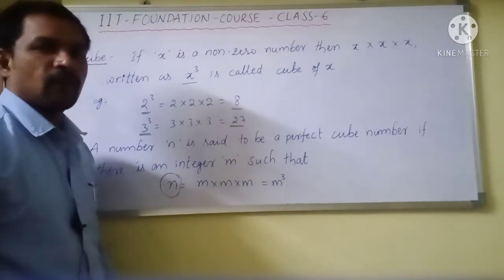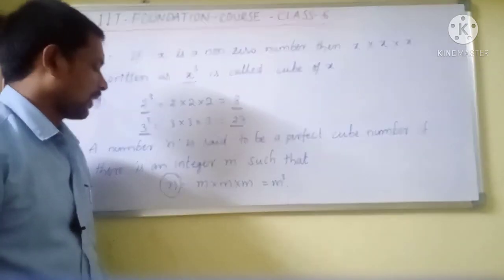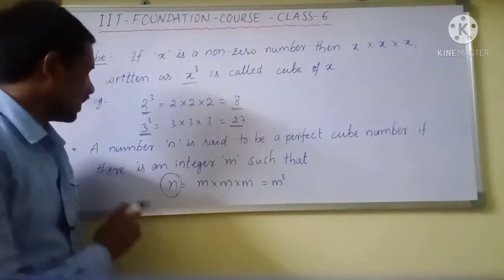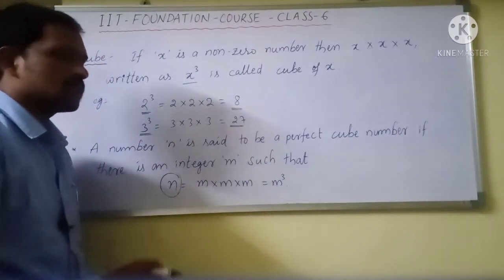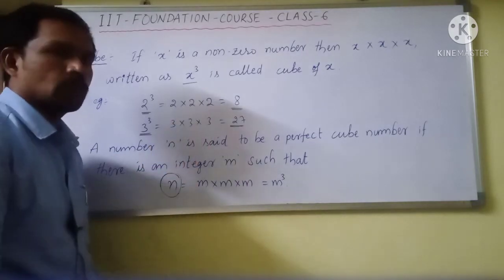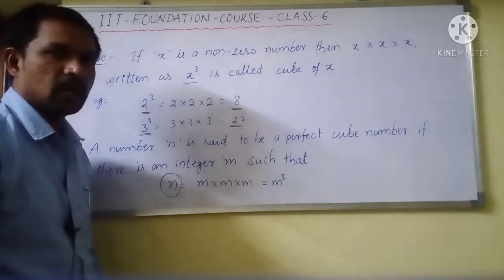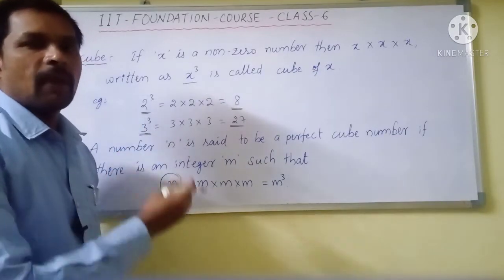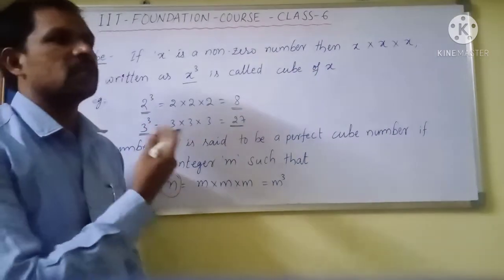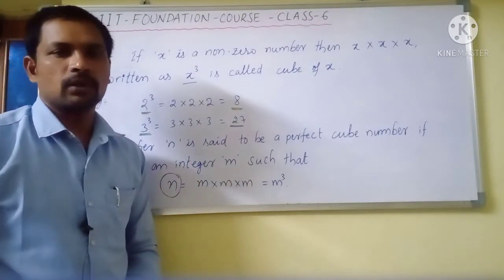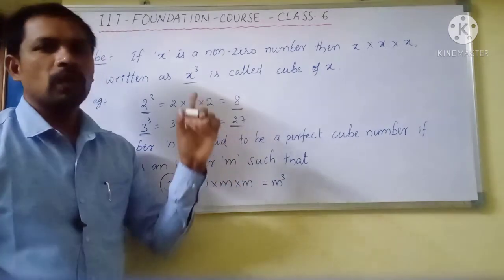Then n is called the perfect cube number. Once again, a number n is said to be a perfect cube number if there is an integer m such that n is equal to m into m into m, that is equal to m cube, then the number n is called the perfect cube number.